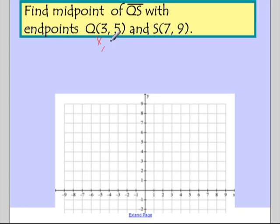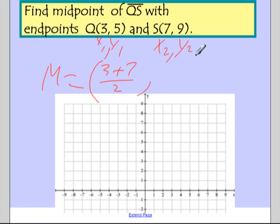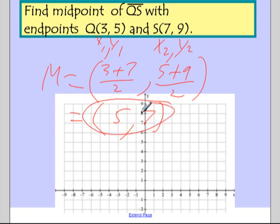So, if I call this my X1, Y1, and this my X2, Y2, the midpoint is going to be the average of the two x's. So, that's 3 plus 7 over 2. And the y value is going to be the average of the two y's. So, 5 plus 9 over 2. And if we just simplify those, we get 3 plus 7 is 10, divided by 2 is 5. 5 plus 9 is 14, divided by 2 is 7. And that is the midpoint of the segment between those two points.